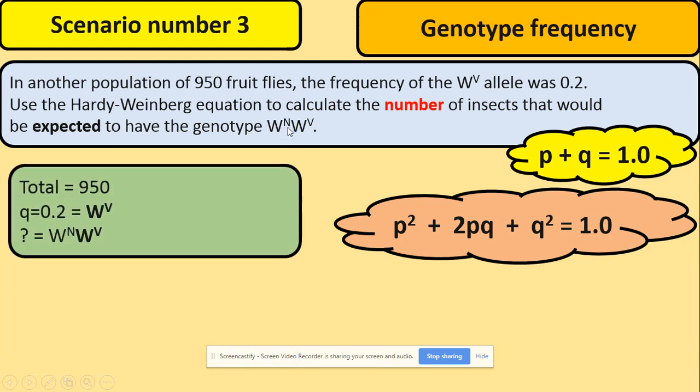So what do we need to do? The same as before, write down what we know. So we've got total, we've got the q which is 0.2, and we're looking for this genotype here which is our heterozygous within the formula.